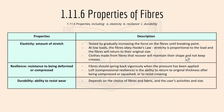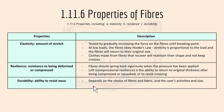Finally, 1.11.6 covers the properties of fibers. Elasticity is the amount of stretch — tested by gradually increasing force until breaking point. At low loads fibers obey Hooke's Law: stretch is proportional to load and fibers return to original size. Resilience is the resistance to being deformed or compressed; fibers should spring back vigorously. Loft or compressional resilience is the ability to return to original thickness after being compressed or to resist creasing. Durability is the ability to resist wear, depending on fiber or fabric choice and the user's activities.